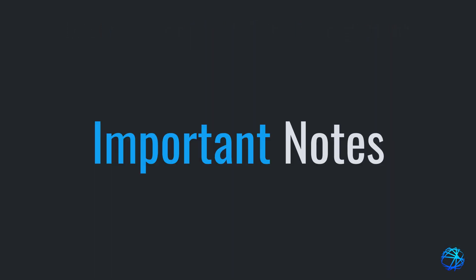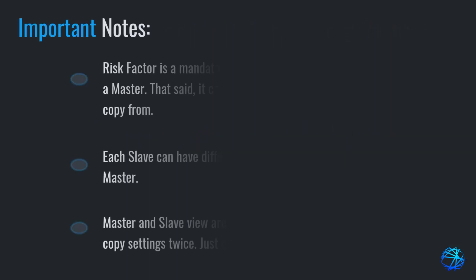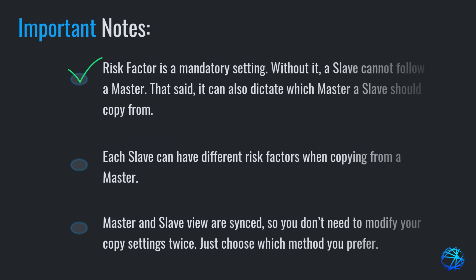Before we end this tutorial, take note of the following. Risk factor is the mandatory setting — without it, a slave cannot follow a master. It also dictates which master a slave should copy from. Each slave can have different risk factors when copying from a master. Master and slave views are synced, so you don't need to modify your copy settings twice — just choose which method you prefer.